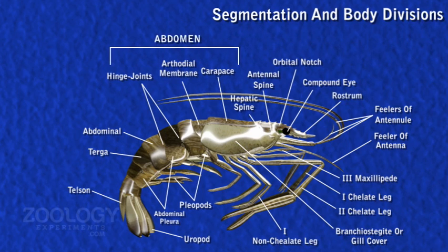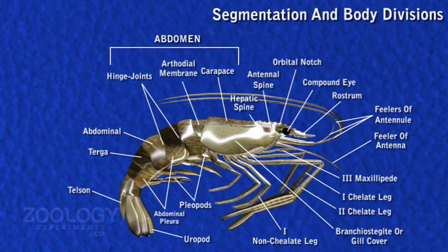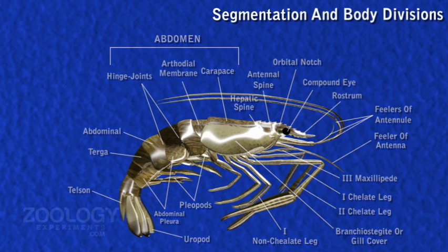Abdomen: It is well developed and jointed, composed of six distinct movable segments and a terminal plate or telson, which is not considered a segment because of its post-segmental origin. Abdominal segments are dorsally rounded, laterally compressed, and normally bent under the cephalothorax, so the animal looks bent in shape. The abdomen looks almost circular in cross-section. Each abdominal segment carries a pair of jointed appendages called pleopods or swimmerets.